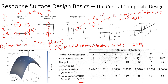For a 2² design we need 4 corner points, 4 star points, and 4 center points — totaling 12 runs. For a 2³ design: 8 corner points, 6 axial points, and 4 center points gives 18 runs. For a 2^(5−1) half-fraction with five variables: 16 corner points, 10 axial points, and 4 center points totals 30 runs.